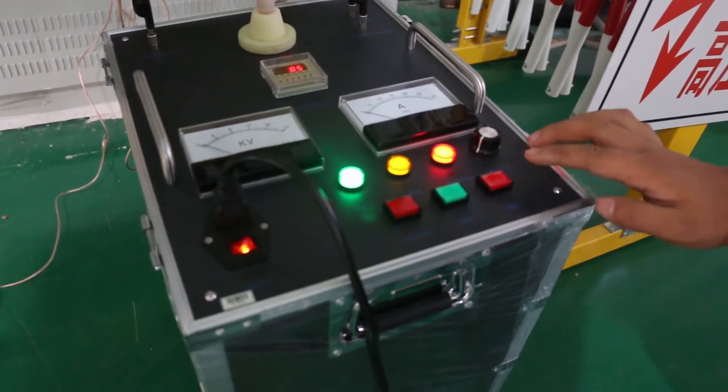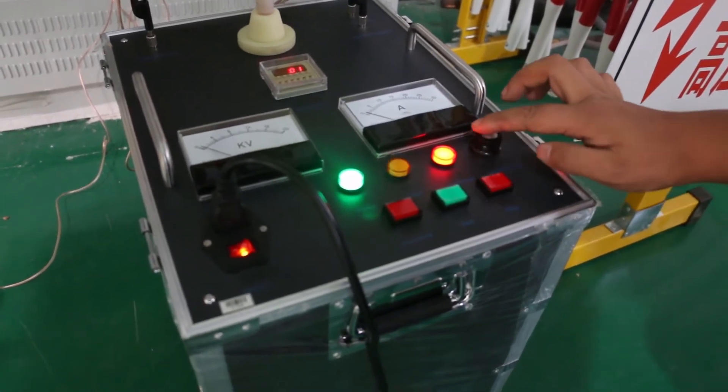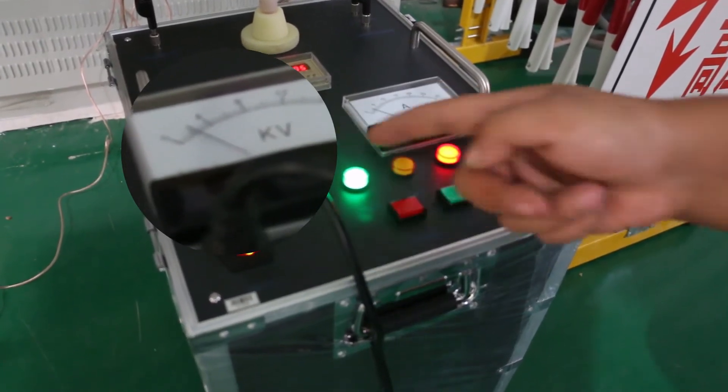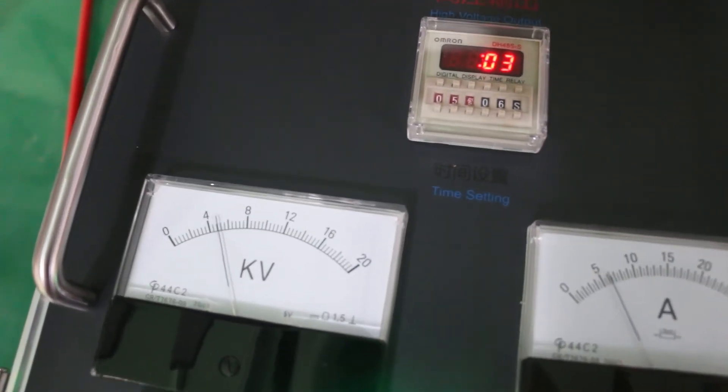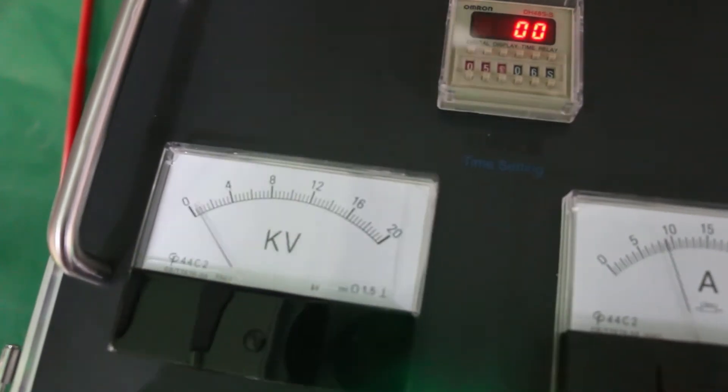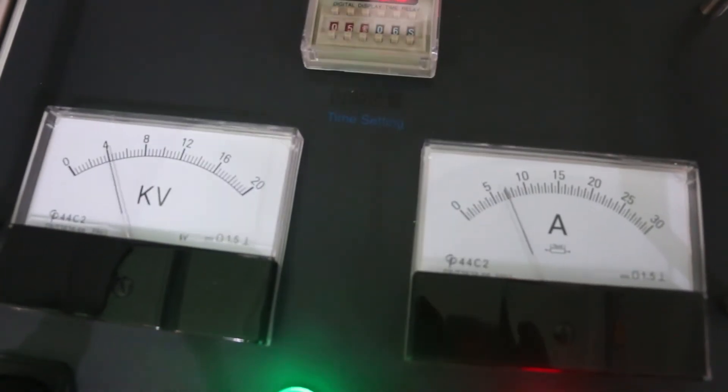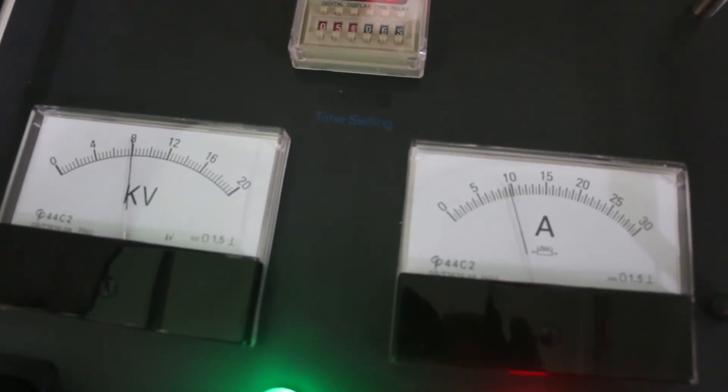Turn the voltage regulator clockwise. Zero indicator will light off and voltmeter shows the output voltage. When the voltage is raised up as requested, the voltmeter will turn to zero and current will increase at the moment of discharging, which shows the machine is working normally.